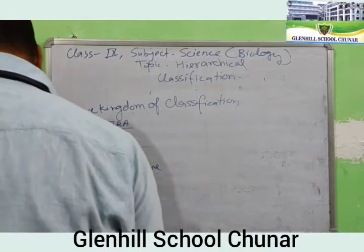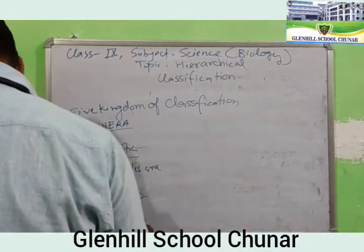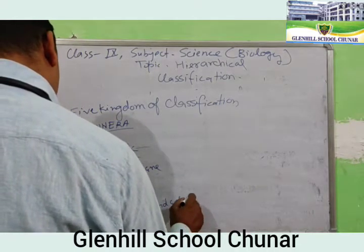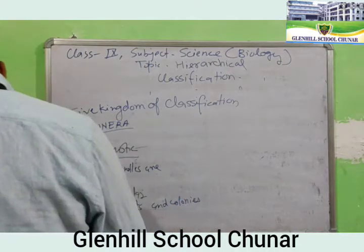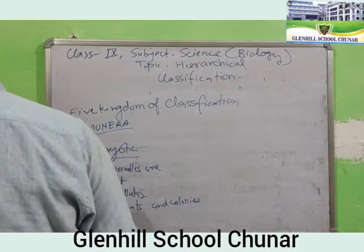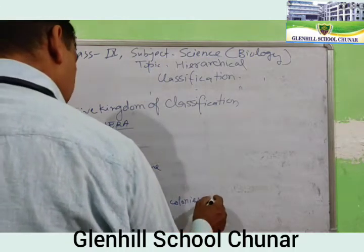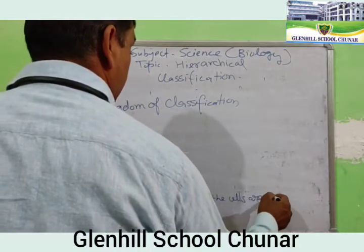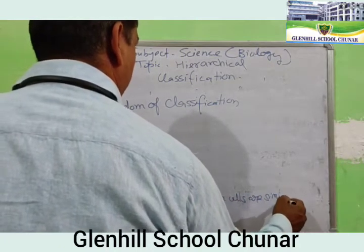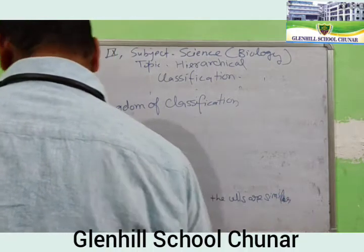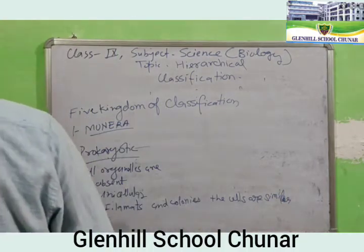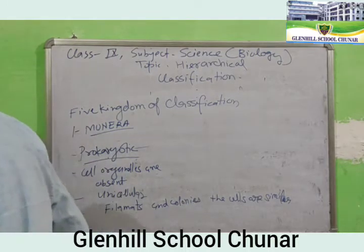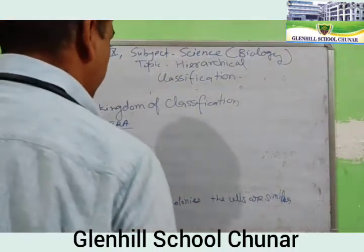Cell organelles are absent in Monera. They are basically unicellular organisms. Some may also form filamentous structures and colonies.